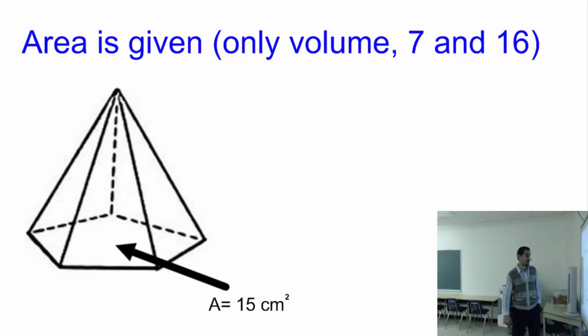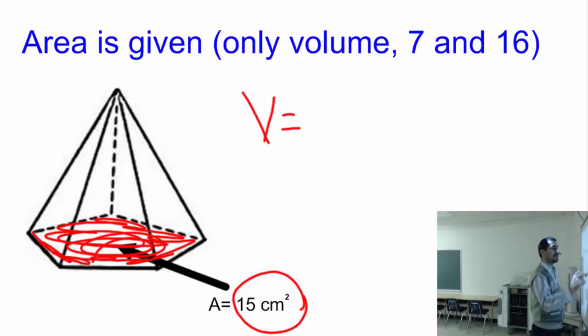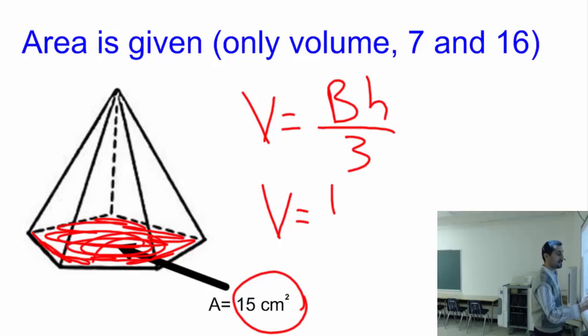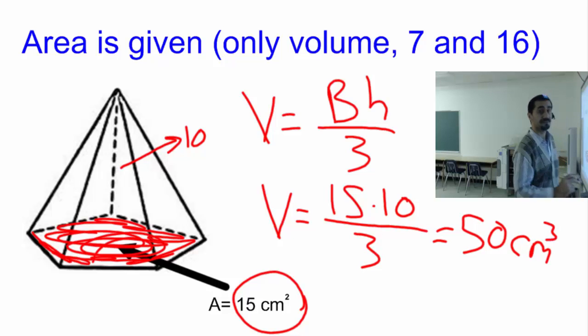Here is an area given question. It's a polygon and the area is already given to us - we don't have to calculate the area, which is 15 centimeter square. So what is the volume? If you remember, the volume formula is Bh divided by 3. So now you know the B which is 15 times H, which is not given yet. So let's say it is 10 divided by 3. That will give you 50 centimeter cube. That's it. That will be done. So area given, it's pretty simple.